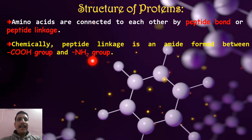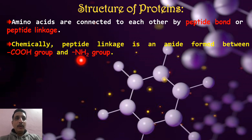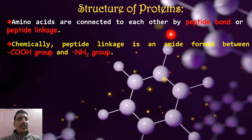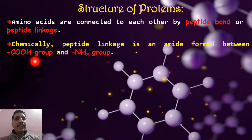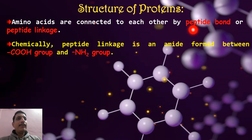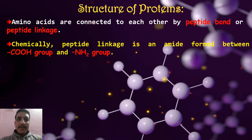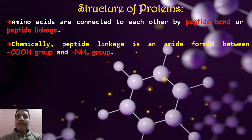The peptide bond is formed between the COOH group and the NH₂ group. Whenever a carboxylic acid group reacts with an amine group, there is a formation of an amide linkage — this we discussed in first year organic chemistry. This amide functional group is nothing but a peptide bond. Don't use the word 'amide' here; even though it is an amide linkage, we call this bond a peptide linkage.